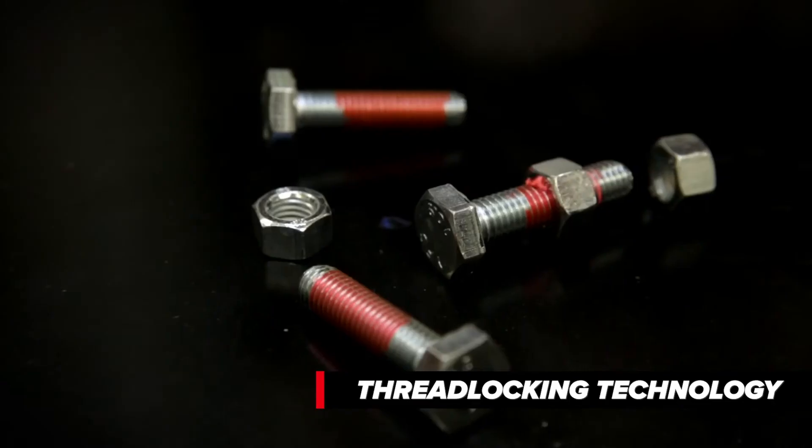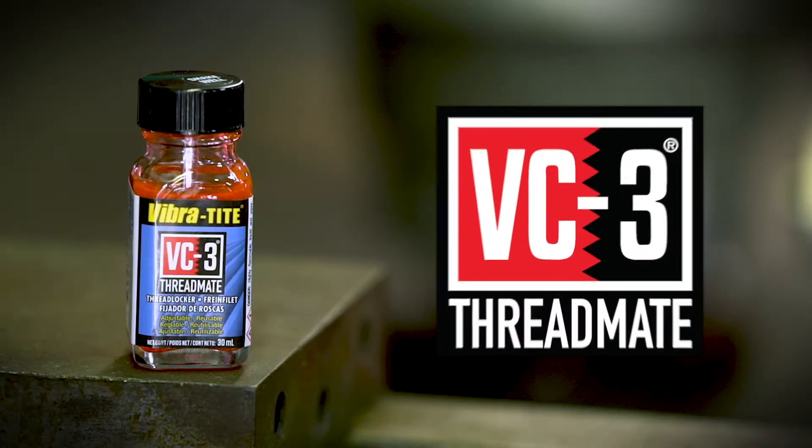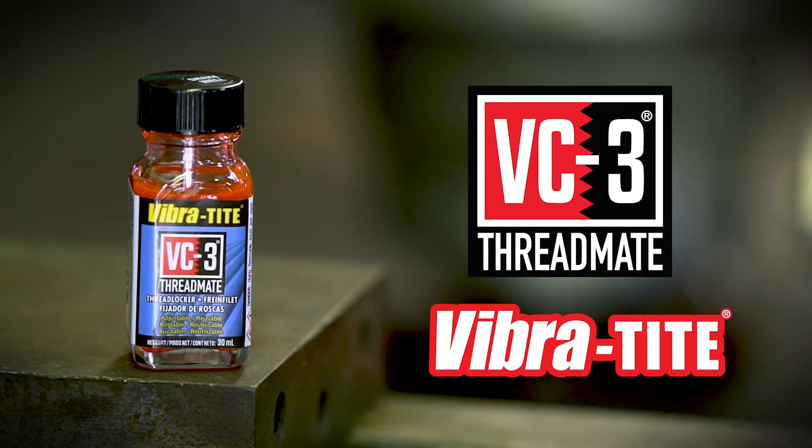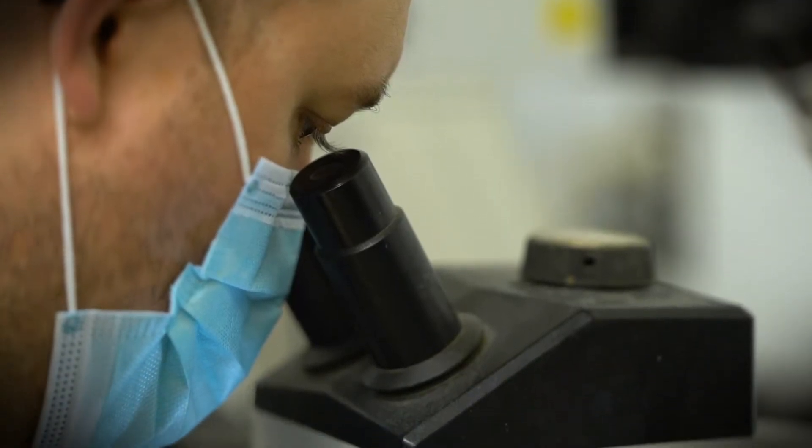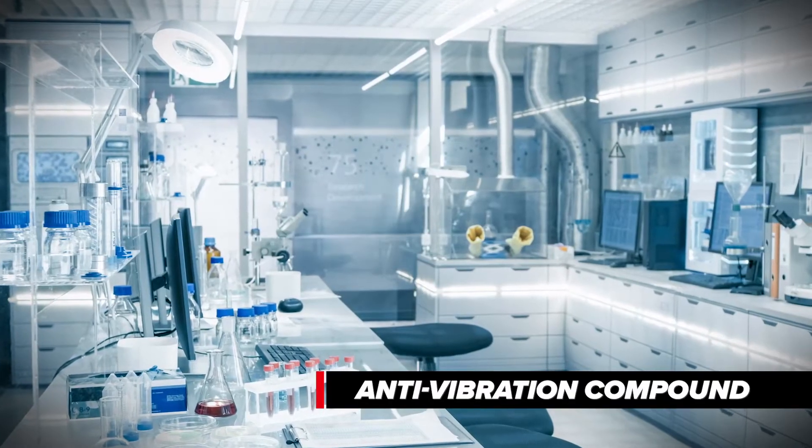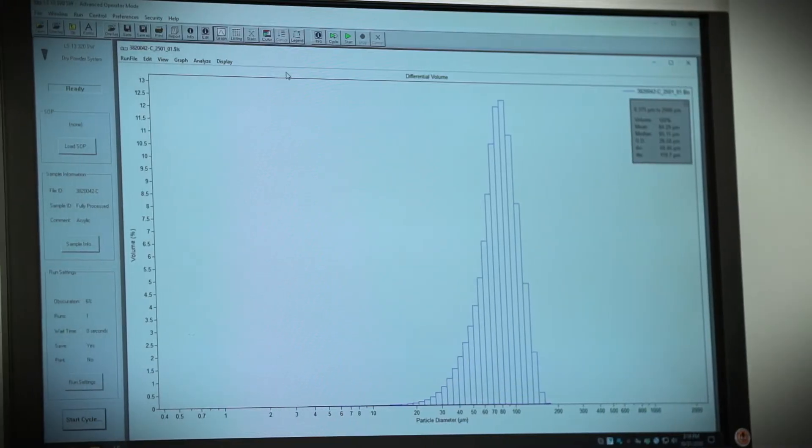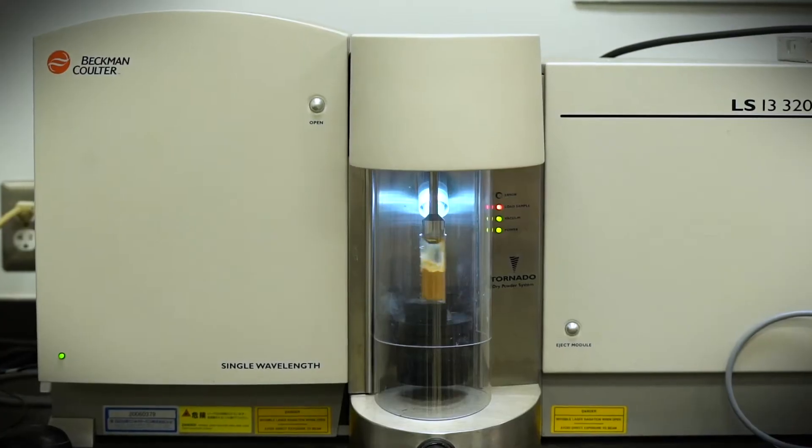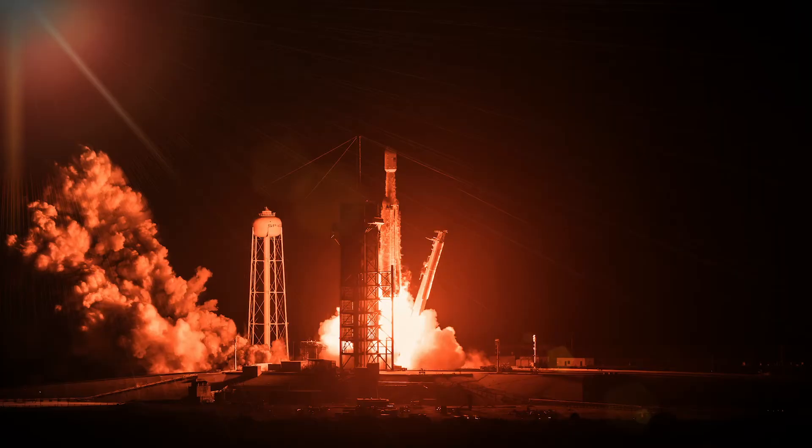Traditional thread-locking technology has evolved with the introduction of VC3 Threadmate from Vibratite. This advanced holding technology was developed with an anti-vibration compound designed to absorb stress and prevent fastener loosening. This is the same engineered compound currently being used in critical aerospace and rocket applications.